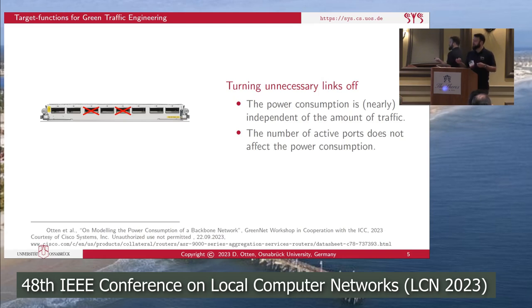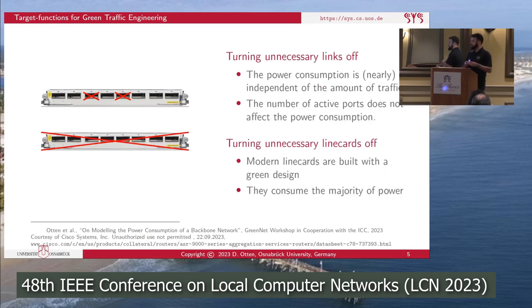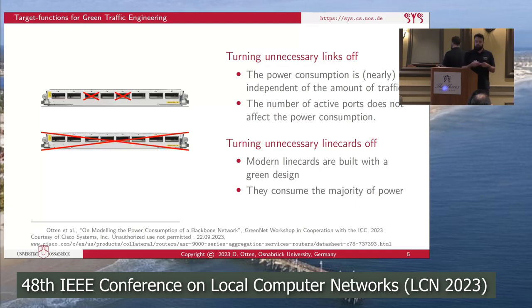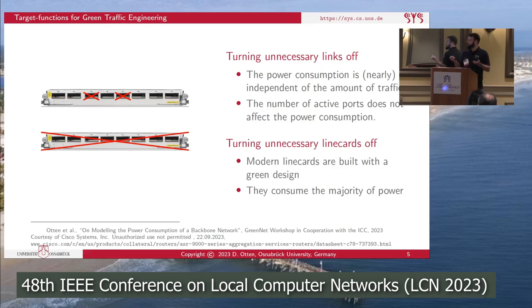So there is only one remaining target function for green traffic engineering: turning unnecessary line cards off. They consume the vast majority of power within the network, and some modern line cards are built with a green design — they are capable of turning on and off very quickly. This is the way to go: turning off unnecessary line cards to reduce the overall power consumption.